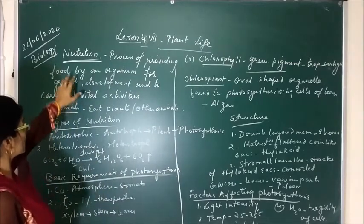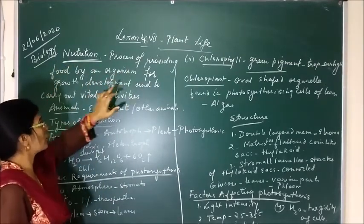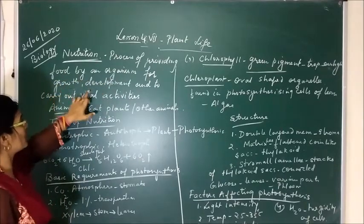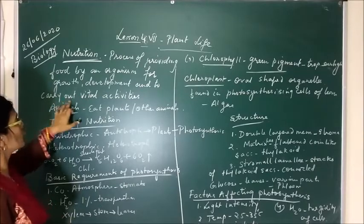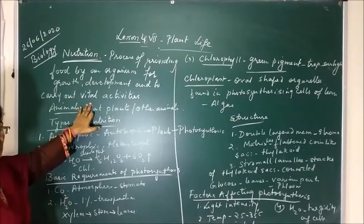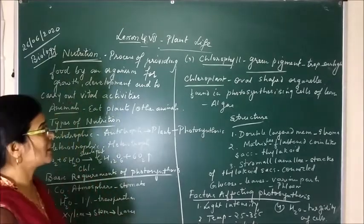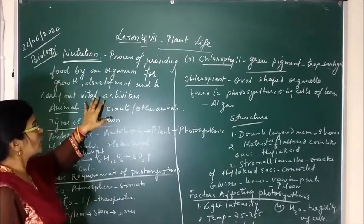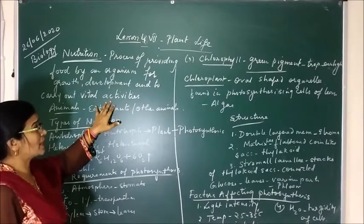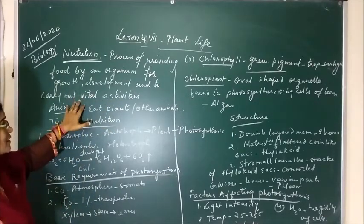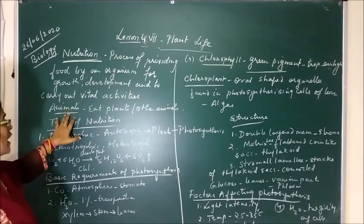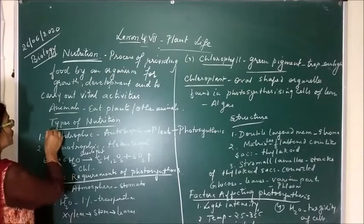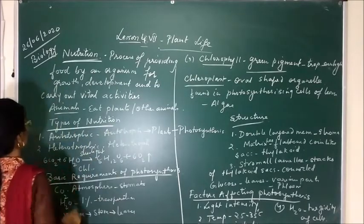So first of all, what is nutrition? Nutrition means it is the process of providing food by an organism for their growth, development, and to carry out vital activities. Food is required by all — both plants and animals. Plants require food, and the food prepared by plants is also provided to animals. According to nutrition, the type of nutrition may be categorized.